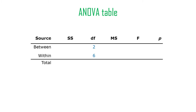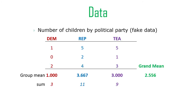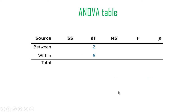There are three groups, so the degrees of freedom between groups is two, because it's k minus one, and k equals three. Degrees of freedom within groups is n minus one for each group added together: two plus two plus two equals six. Or equivalently, n plus n plus n minus k: three plus three plus three is nine, minus three is six. Either way, that works out.